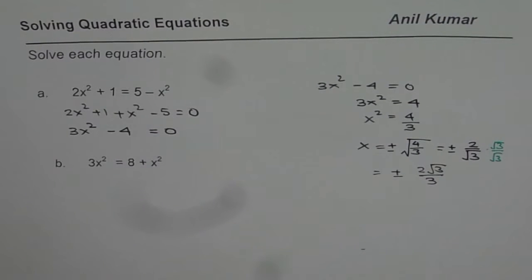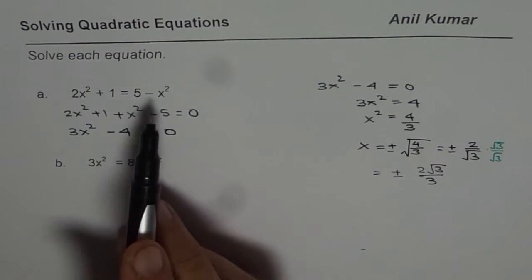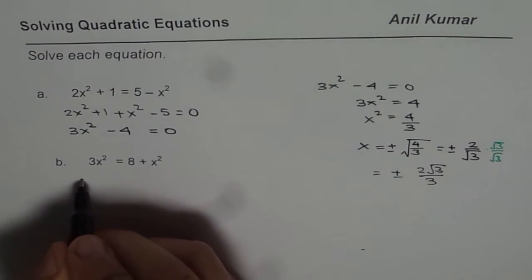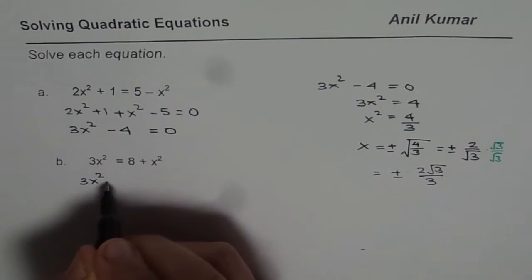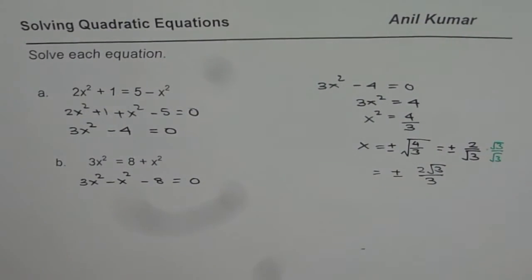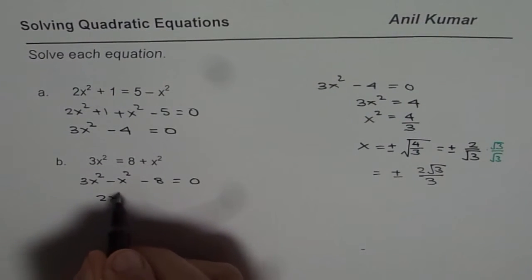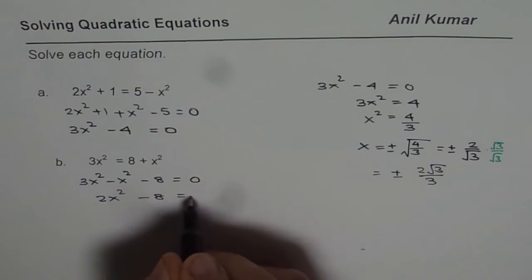Now, let us look into the next one. Here, we have 3x square equals to 8 plus x square. We will do exactly the same thing. So, we have 3x square minus x square minus 8 equals to 0. Bringing all the terms to one side. So, 3x square minus x square is 2x square. So, we have 2x square minus 8 equals to 0.